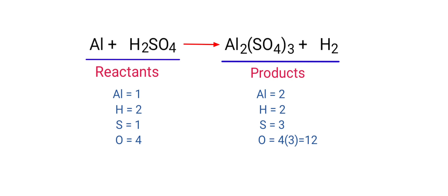And on the products side, there are 2 Aluminium atoms, 2 Hydrogen atoms, 3 Sulphur atoms, and 12 Oxygen atoms present. The number of atoms are not balanced on both sides.